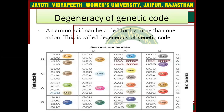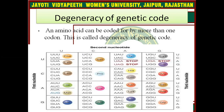Regarding degeneracy of the genetic code: an amino acid can be coded for by more than one codon — this is called degeneracy of the genetic code. For example, serine can be coded by UCU, UCC, UCA, and UCG. Because it can be coded by more than one codon, we call this phenomenon degeneracy of the genetic code.